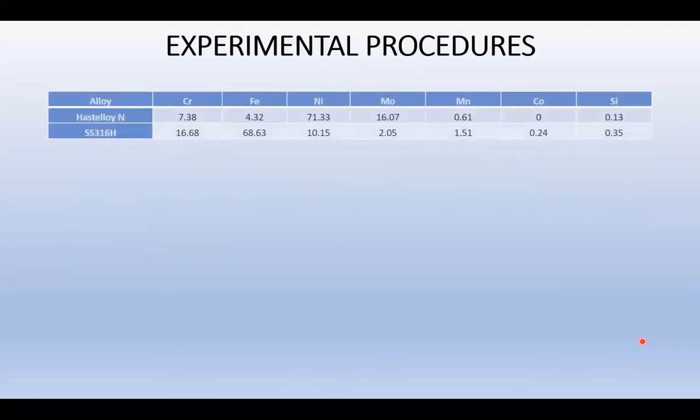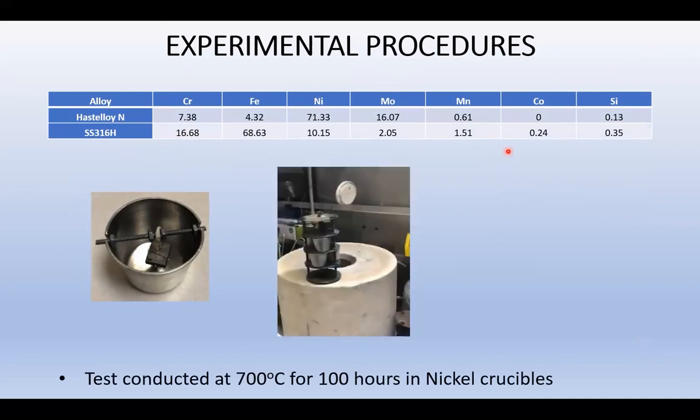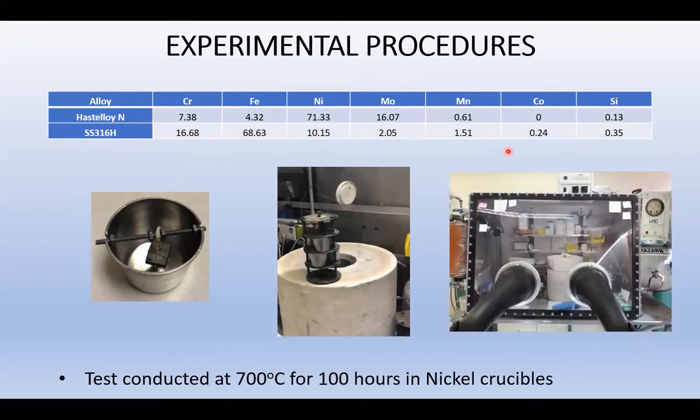For our experiment, we are testing one nickel alloy, Hastelloy-N, and one austenitic stainless steel, 316H. Their nominal compositions as measured by XRF are given in this table. These are exposed to molten Flynac salt inside a nickel crucible for 100 hours at 700 degrees Celsius. In some of these crucibles, we are adding lithium in varying amounts to see how effective it is in redox control. The entire test is carried out inside a glovebox with controlled atmosphere.